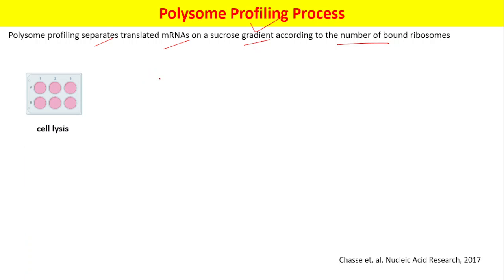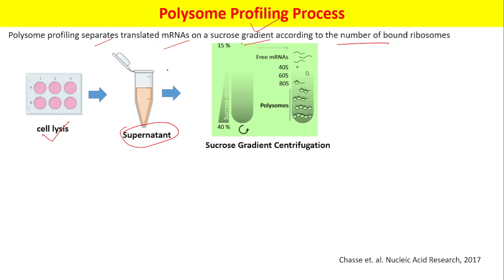The first step in polysome profiling is cell lysis. After cell lysis, we perform centrifugation and collect the supernatant. This supernatant is then loaded onto a sucrose gradient, which is a 15 to 40 percent sucrose gradient, and sucrose gradient centrifugation is performed.